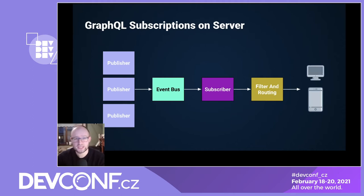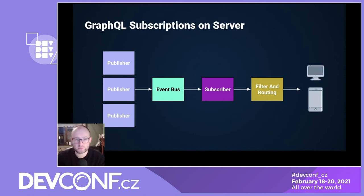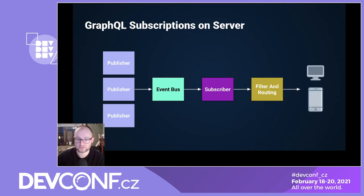Subscriptions are typically using this publish-subscribe mechanism. Publishers are handlers in our code or external systems that will publish the data. EventBus is any queue system that supports publish-subscribe — for example, Redis or AMQ. EventBus will then send a message back to subscribers based on the topic, and those will maintain a registry of currently active subscribers connected to WebSockets, so users can receive this data back in the clients.